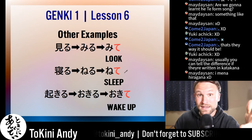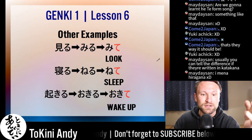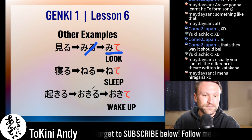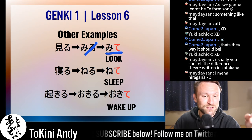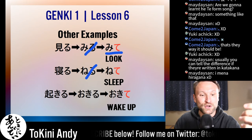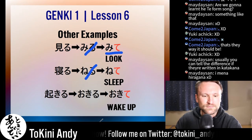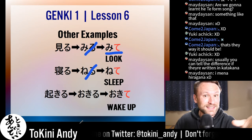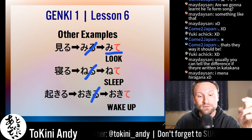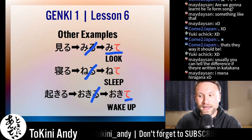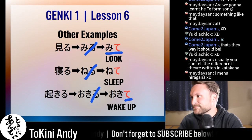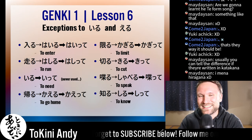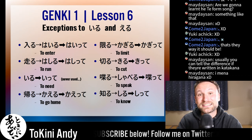Other examples: 'miru' — 'mi' ends in an 'e' sound, so it's an iru verb. You just cut the 'ru' — becomes 'mite,' which means 'look.' 'Neru' — cut the 'ru' — becomes 'nete,' meaning 'sleep.' 'Okiru' means 'wake up' or 'get up' — 'ki' ends in an 'e' sound, so it's an iru verb. You cut the 'ru,' add 'te' — becomes 'okite.' Wake up!